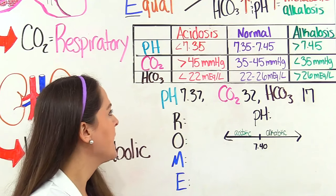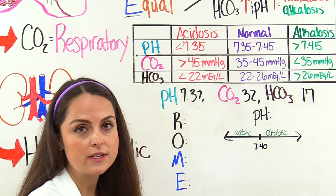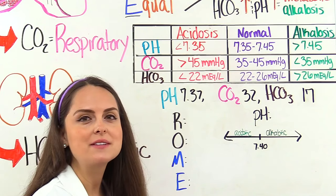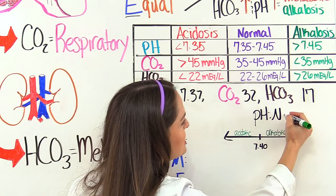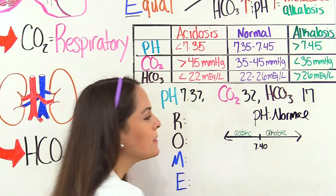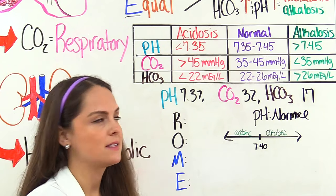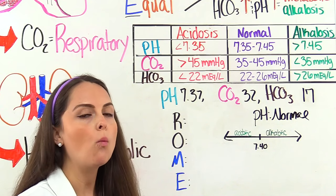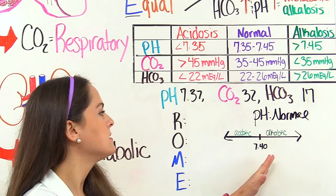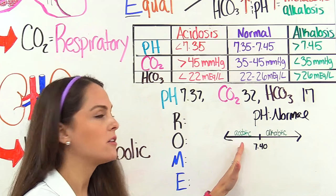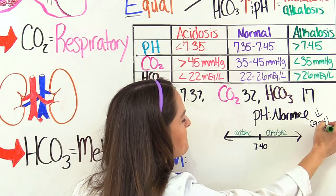Next problem: blood pH of 7.37, CO2 of 32, bicarb of 17. Blood pH is 7.37 — normal range 7.35 to 7.45 — so we're normal, suggesting full compensation. The absolute normal is 7.40, and 7.37 is lower than that, so we're on the acidotic side of normal.